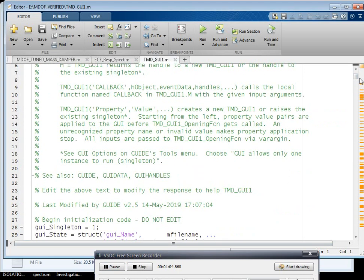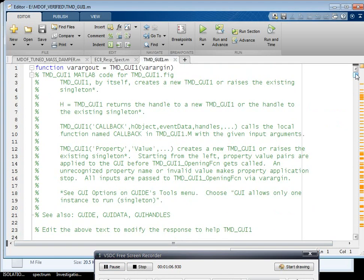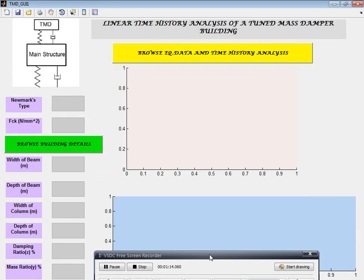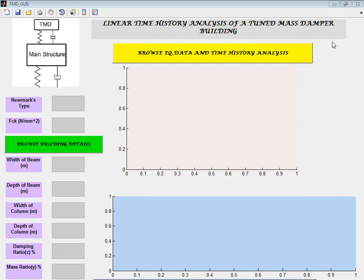This is the GUI. When you run this, you will get a user interface like this. This is our simple MATLAB GUI titled 'Linear Time History Analysis of Tuned Mass Damper Building.' This is lumped mass system concept - the results are analyzed in lumped mass system.